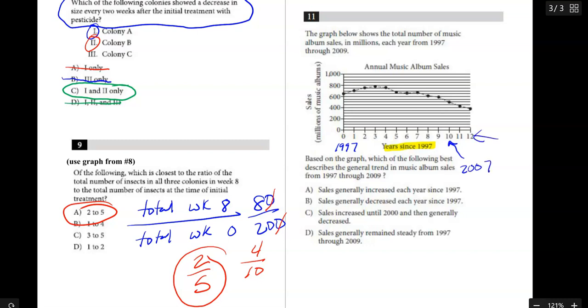So based on the graph, which of the following best describes the general trend from 97 through 09? Well, it kind of looks like if you're peeking at the graph here, it looks like we increased right there about three or four years in, and then we kind of start this steady decline coming down. So I'm looking for something that increases then decreases.